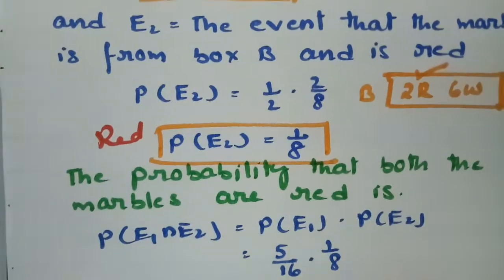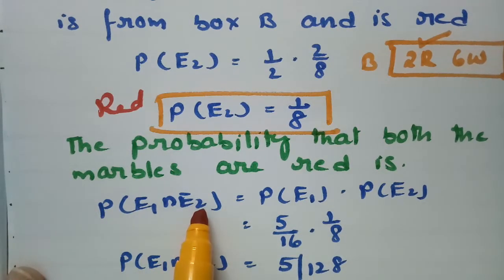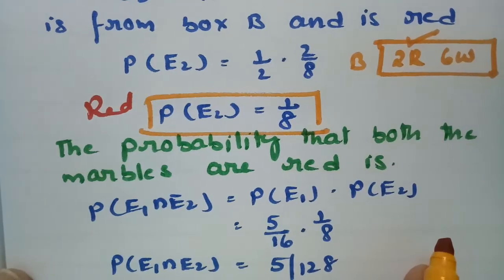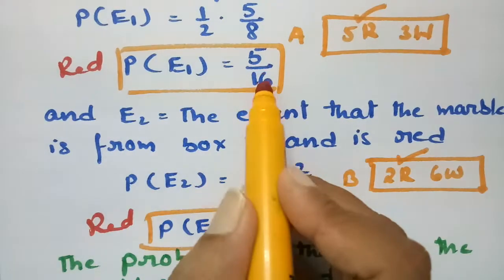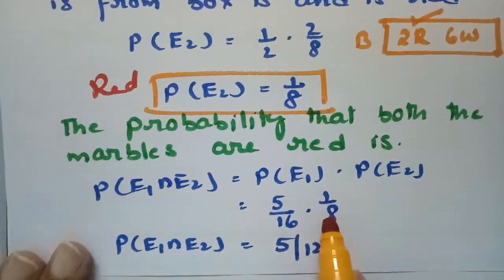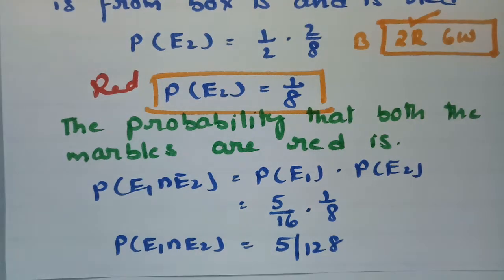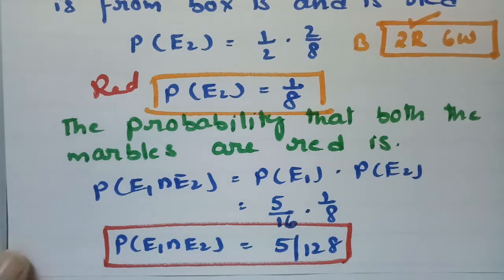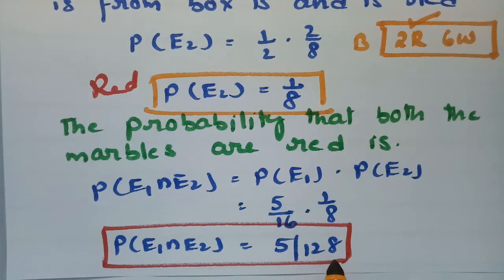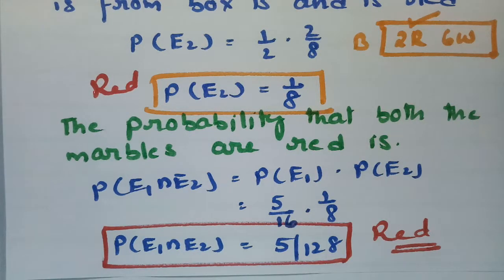The probability that both marbles are red is P(E1 ∩ E2). Since these are independent events, that equals P(E1) × P(E2) = 5/16 × 1/8 = 5/128. So the probability of getting red from both box A and box B is 5/128.